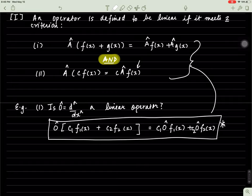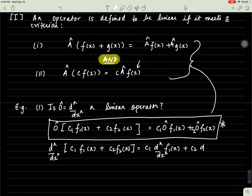I'm going to replace the operator by the nth derivative operator, which is basically just take the derivative an n number of times. If it acts on c1 f1 of x plus c2 f2 of x, we see that we indeed get this result. Therefore, taking the nth derivative—the first or the second or the third or the zeroth derivative of something—does make it a linear operator.